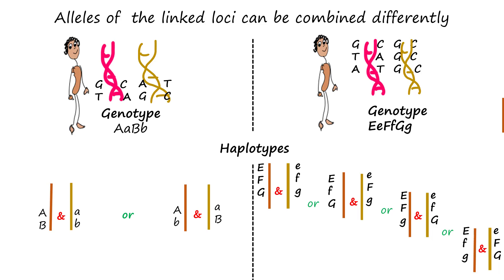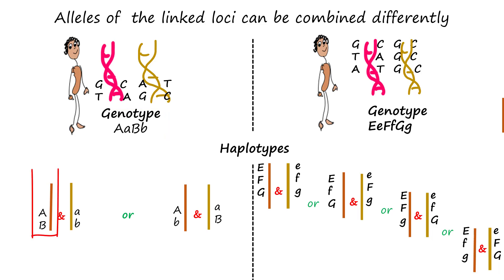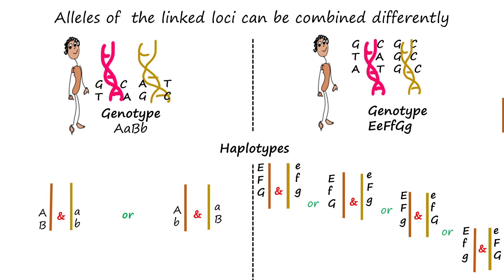In a particular genotype — for example, big A, small A, big B, small B — the alleles present can be combined differently. For instance, the capital A could be linked to the capital B or to the lowercase b, and likewise for the lowercase a. So to determine the haplotypes also requires the linkage phase be known — that is, which alleles of the different polymorphisms are linked in each homologous chromosome.